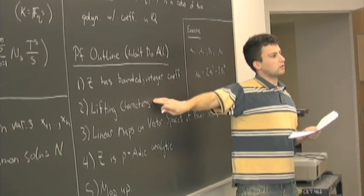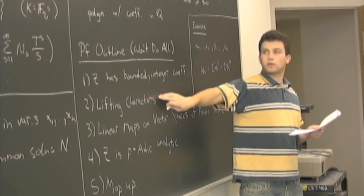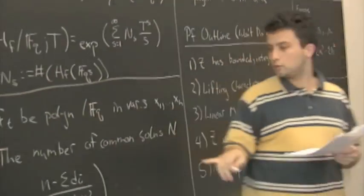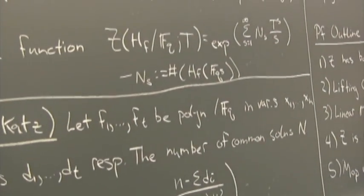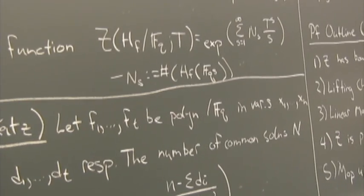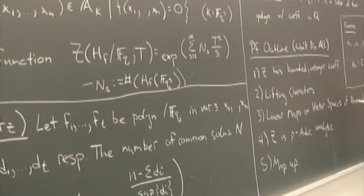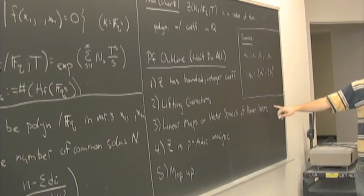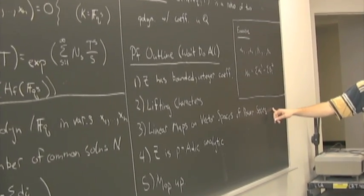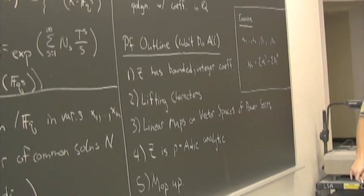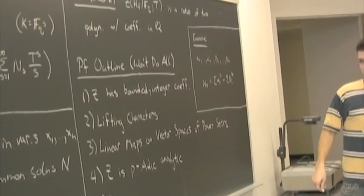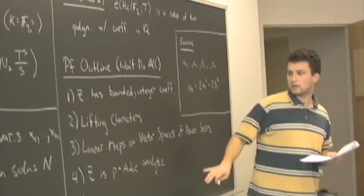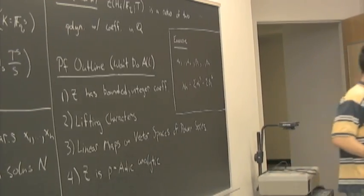As part of the Dwork proof, we use a character to count solutions. N_S is all about counting solutions. An important component is lifting this character into characteristic zero, and we can relate these to linear maps on a space of power series. These are the big ideas that were unbundled by Monsky and Washnitzer.